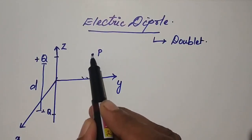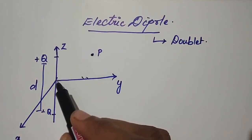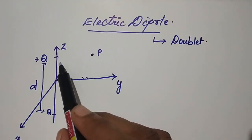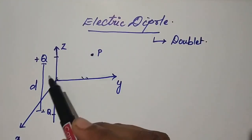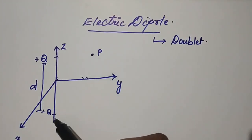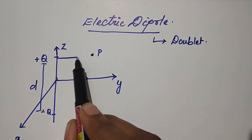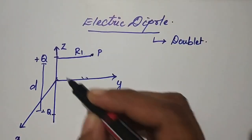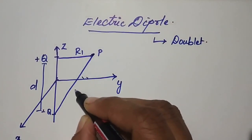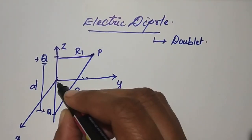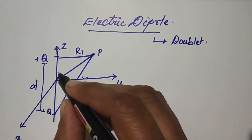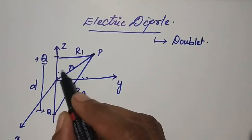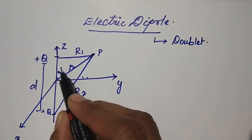Now let us consider a point P. Considering this point P, let us also have the distance between point P and +q, and point P and -q. Let this distance be r1, this distance be r2, and this distance be r. The angle made will be theta.